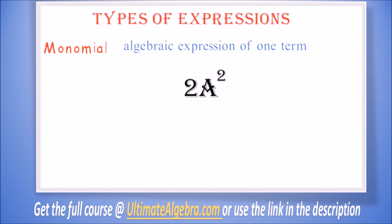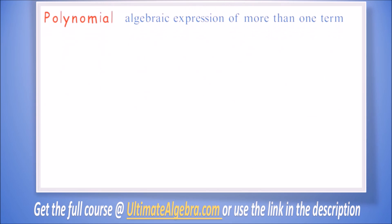A polynomial is an algebraic expression of more than one term. Example: we have 2b plus 3a. There is more than one term in this expression, so it is a polynomial. The terms are 2b and the 3a. 2 plus b plus c is also a polynomial. There are three terms: 2, b, and c.